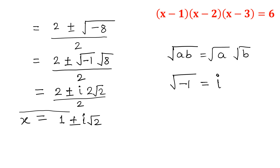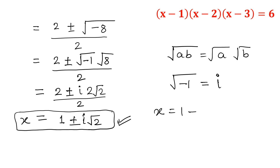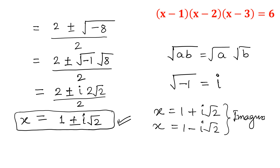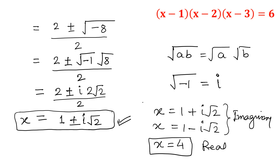So for that cubic equation we have 3 roots. Two roots are complex: x equals 1 plus i root 2, and x equals 1 minus i root 2 — these are the complex or imaginary roots. And one root is real: x equals 4. So x equals 4 is the one real root, and the remaining two roots are complex.